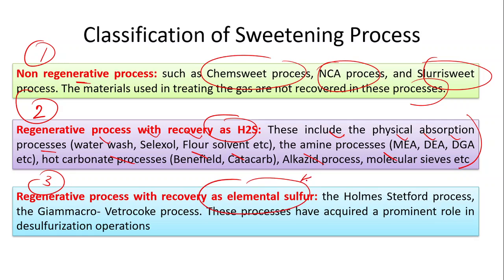The third category is the regenerative process with recovery as elemental sulfur, meaning H2S is converted into elemental sulfur. Examples include the Hulps Step 4 process and the Stretford process. These processes play a prominent role because they also include elemental sulfur recovery.